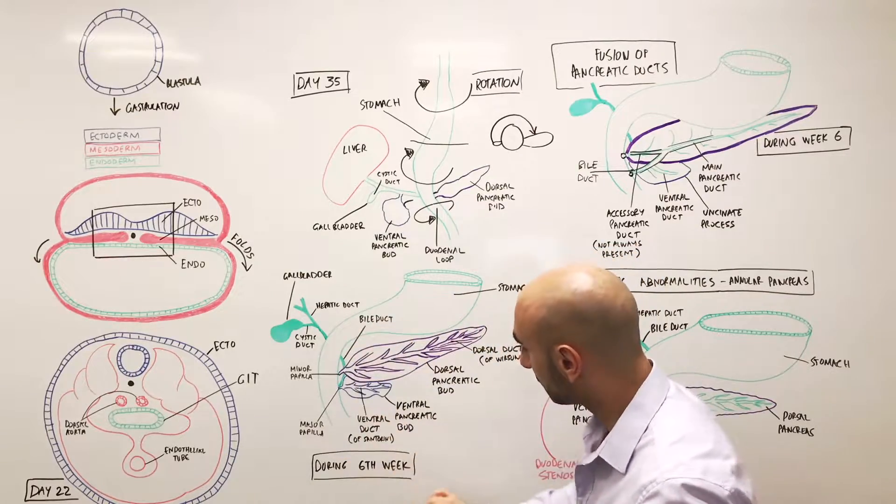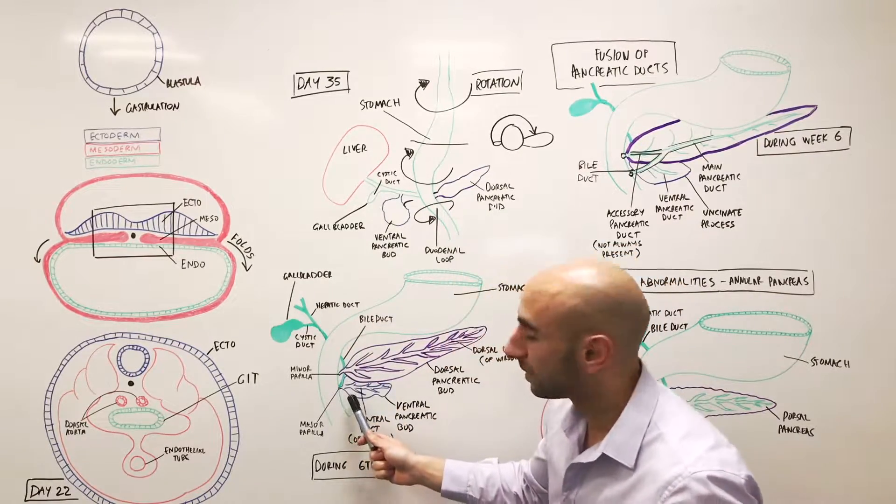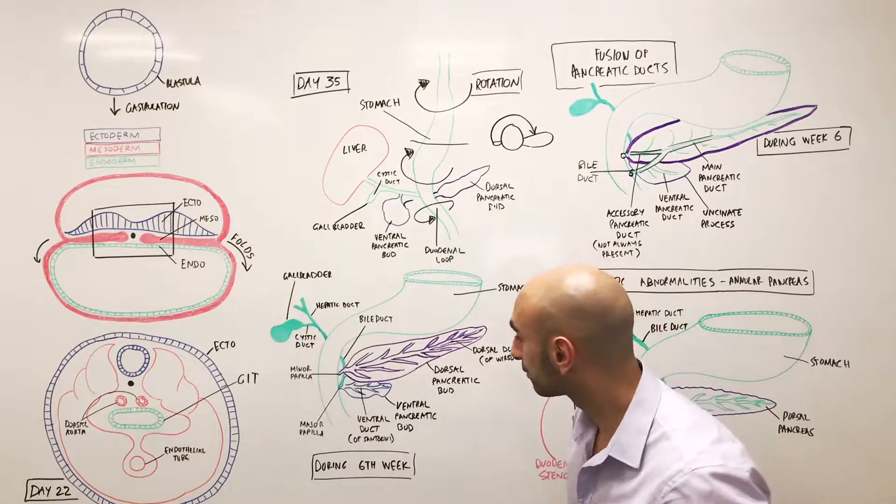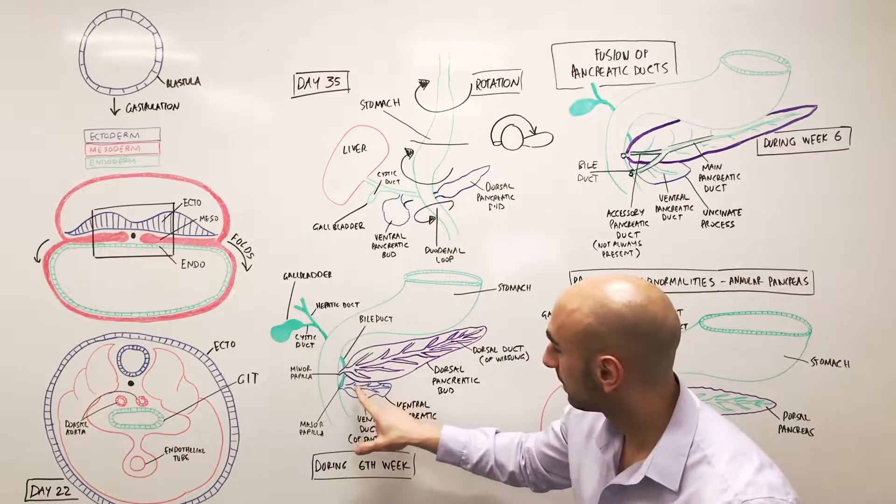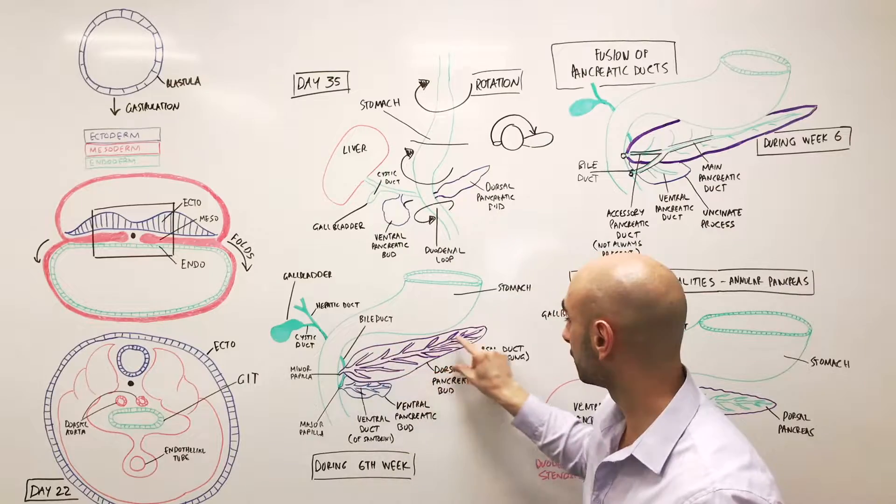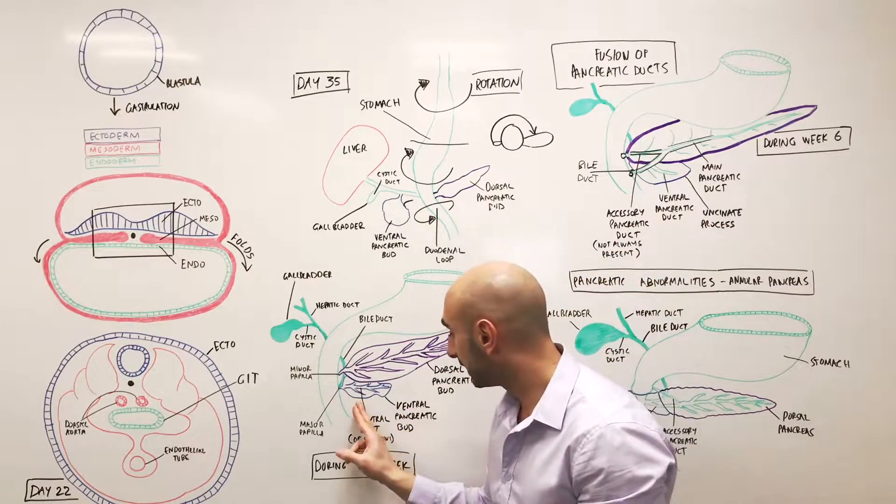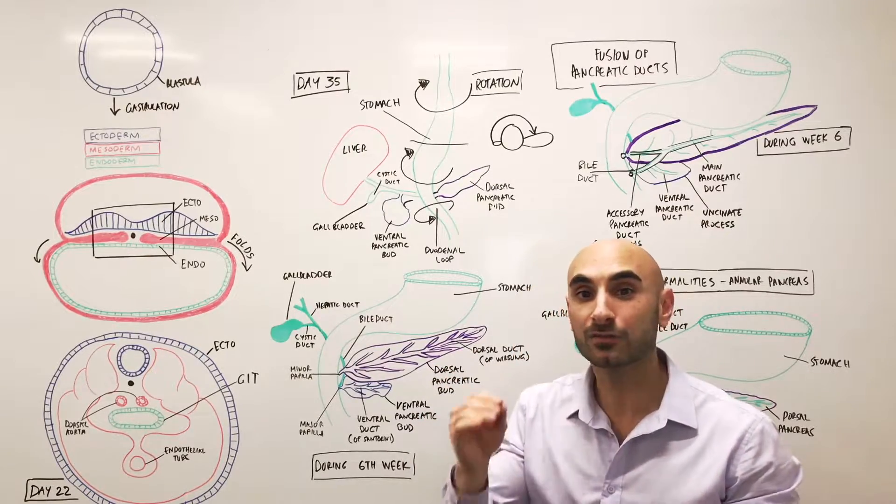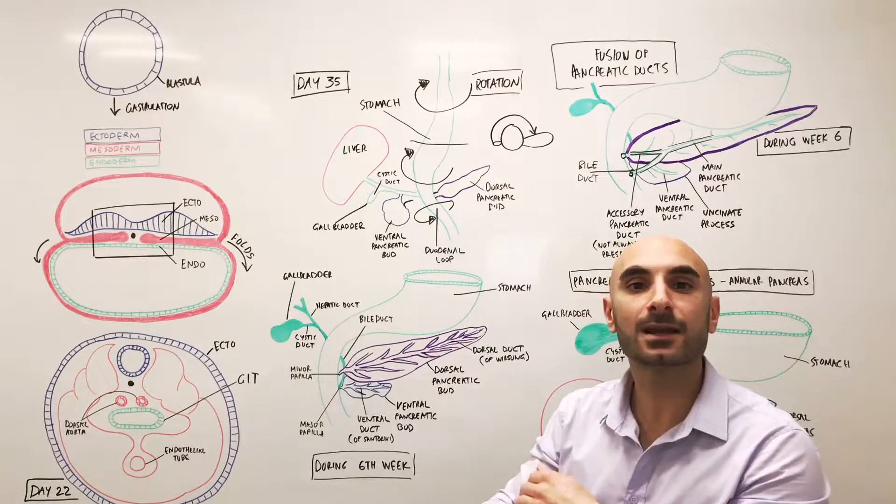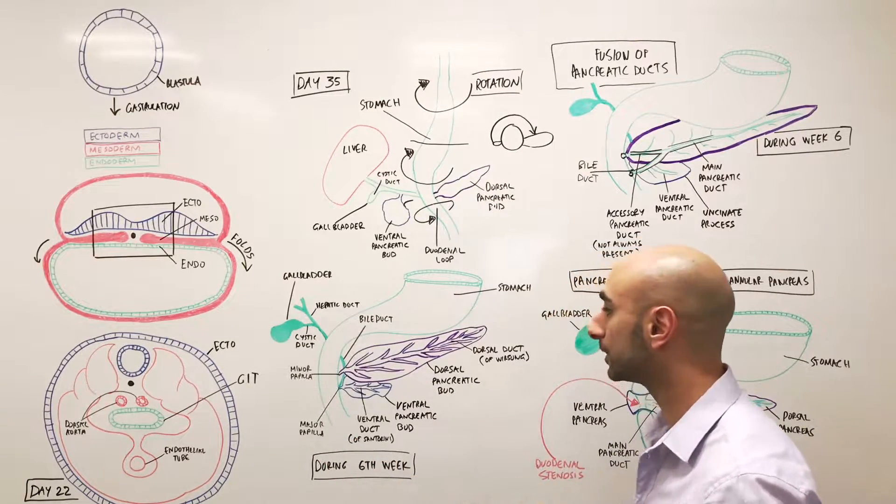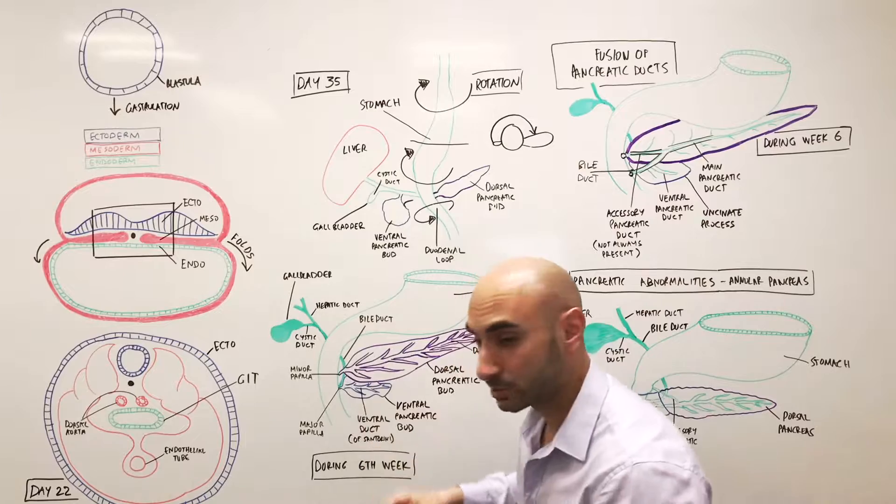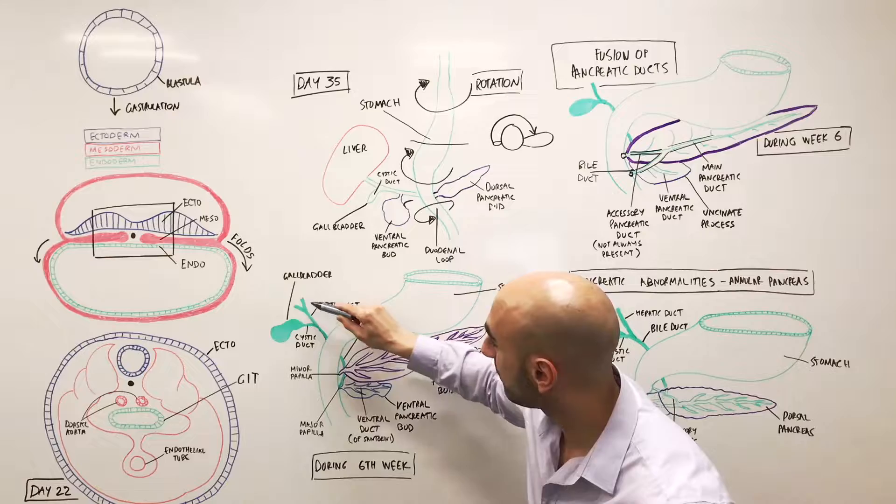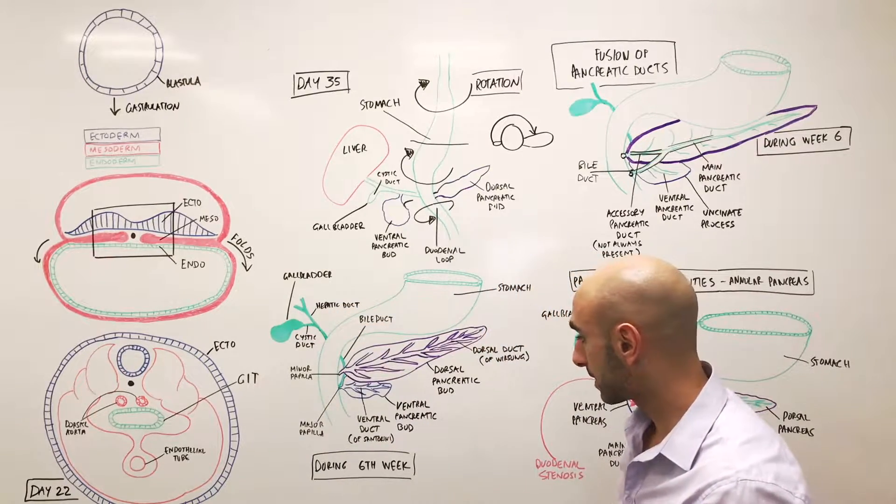Now focusing our attention over here, we'll have its location before the ducts fuse. This is around week six. Ventral pancreas sits below and behind the dorsal pancreas. And the ventral pancreas makes up the uncinate process, and the inferior part of the head of the pancreas. The dorsal pancreas makes up the rest of the gland, or the organ, the rest of the organ. As well, you'll see the bile duct, which becomes the cystic and hepatic duct, and the gallbladder.